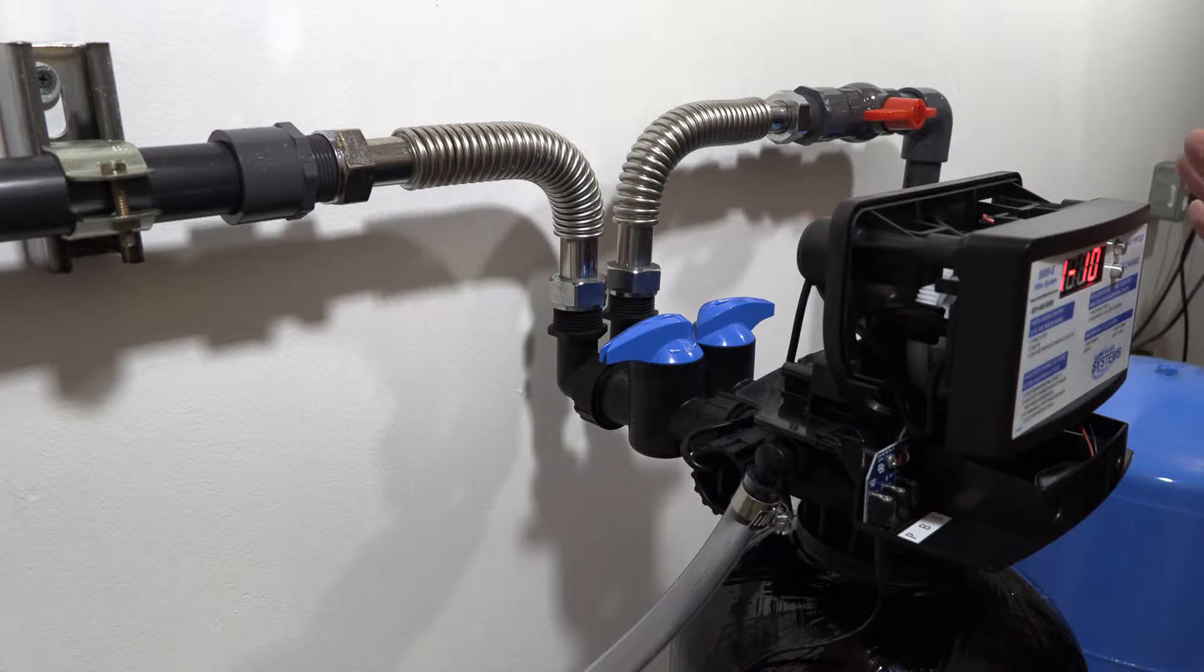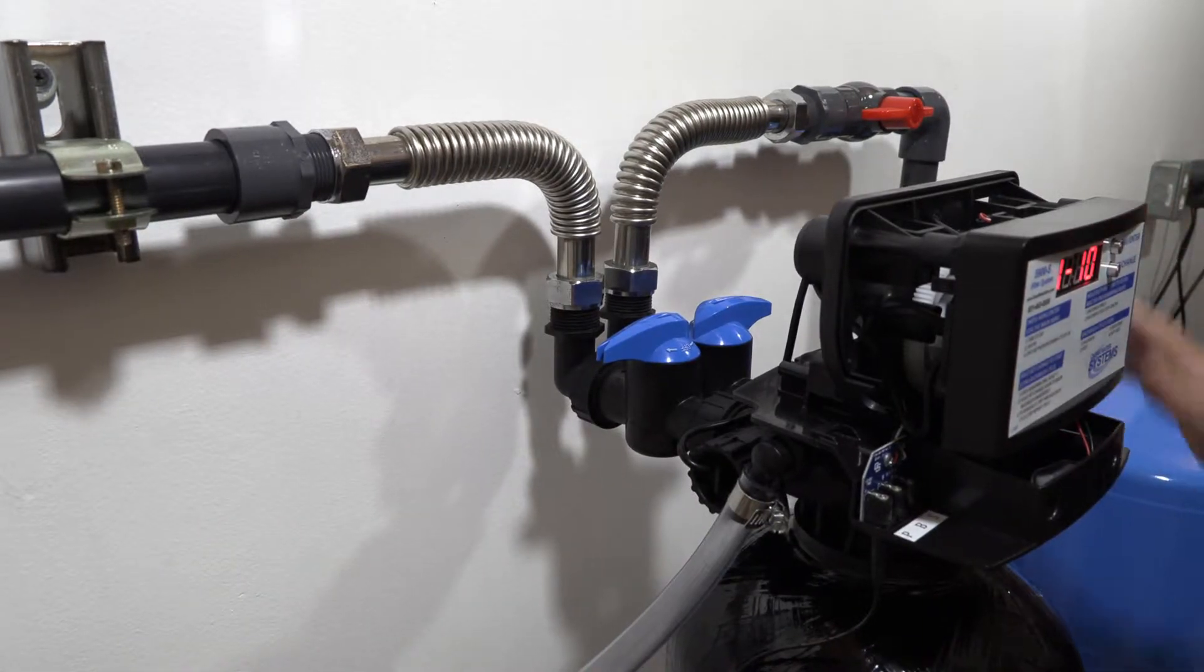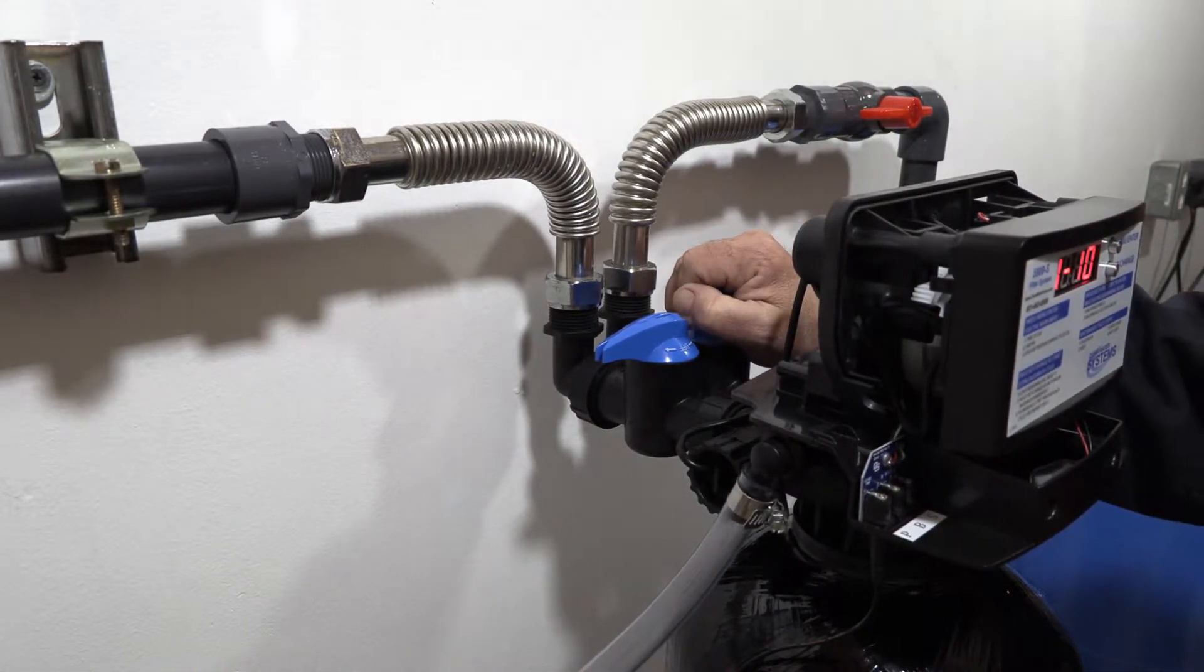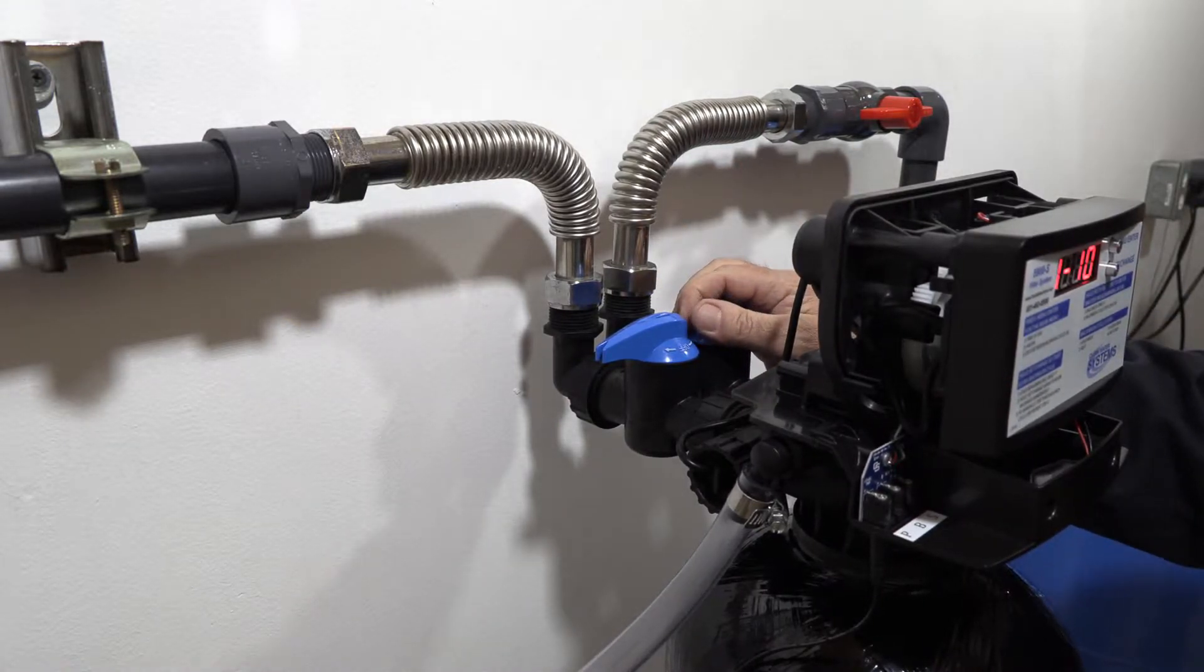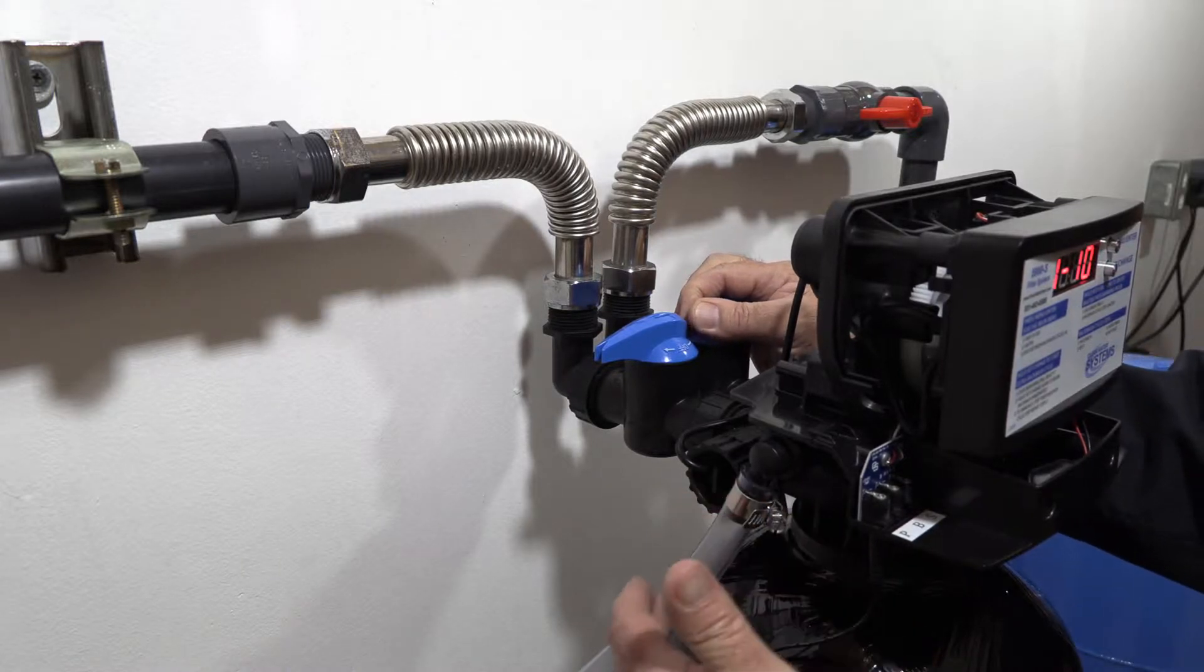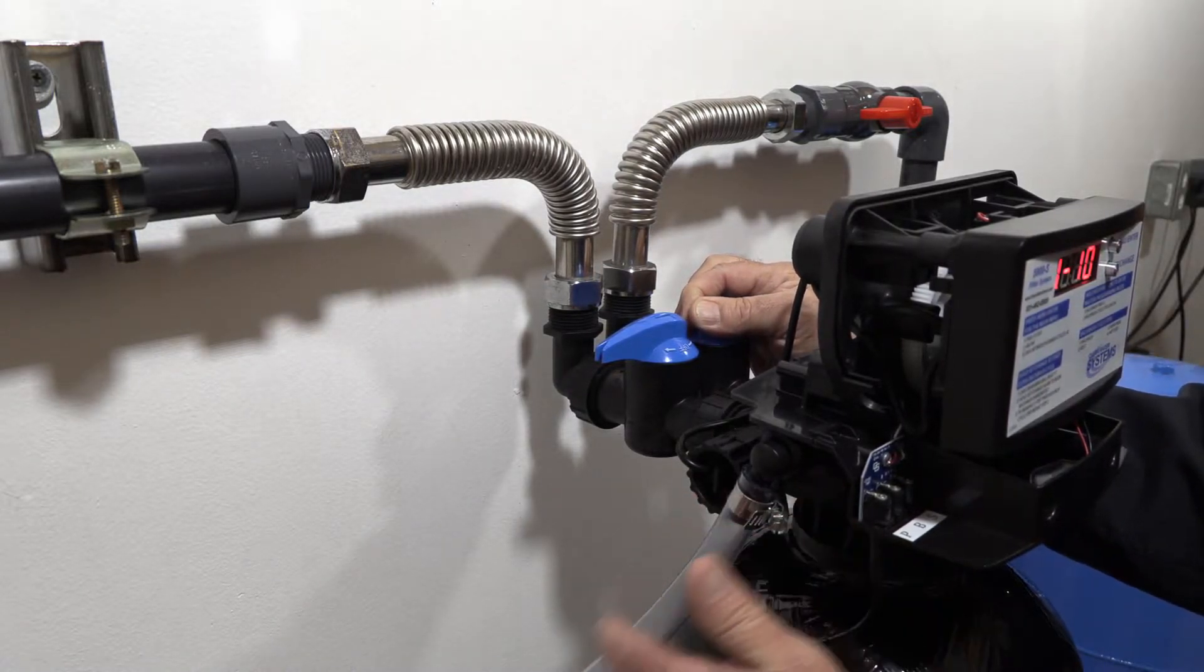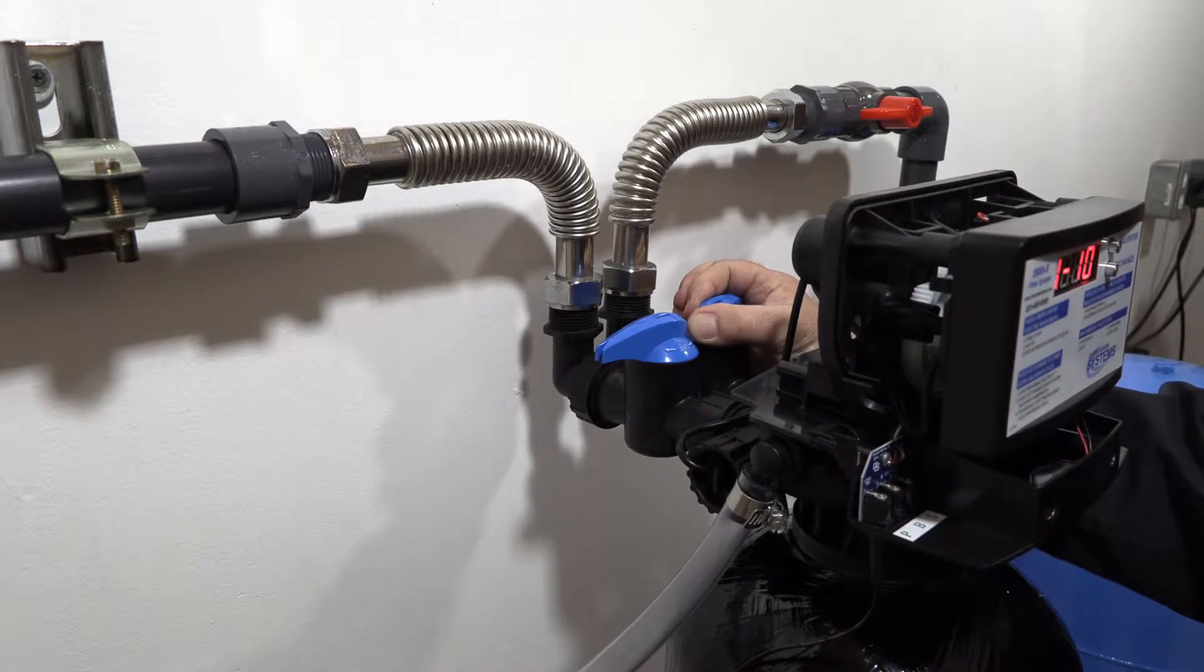So now the valve is in backwash cycle for 10 minutes. What we're going to do is slowly open our inlet bypass valve over a period of about five minutes. What you're going to see initially is air bubbles coming out of here, so just slowly open it.